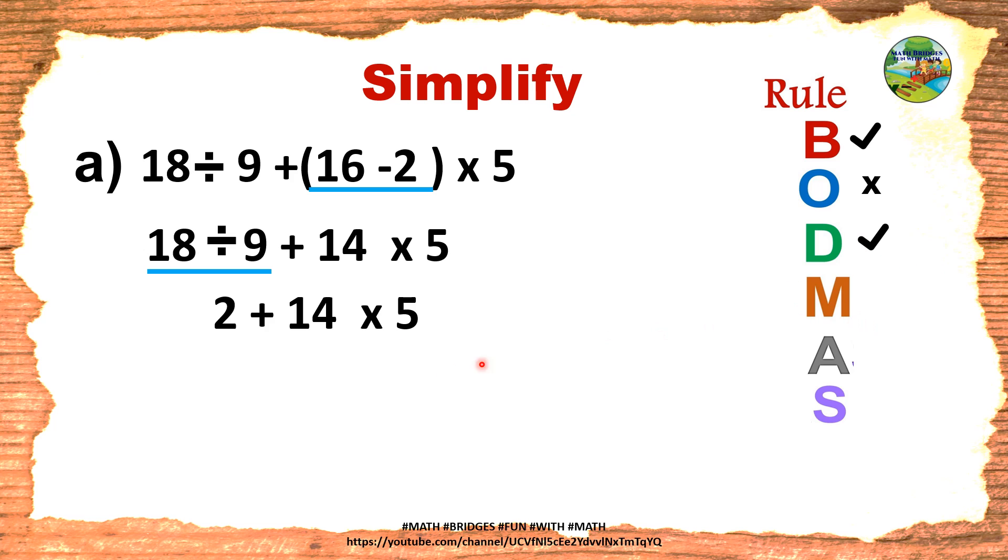Next step is multiplication. Is there any multiplication in the third step? Yes, 14 into 5. Underline that part. We are underlining so that we are solving only that part of it now. 2 plus 14, 5 is 70. So multiplication is over. Tick. Once the job is done, put a tick mark. Next, addition. Is there any addition in this step? Yes. Underline. 70 plus 2, 72. Addition is done. Is there any subtraction? No, cross out. So 72 is our answer.